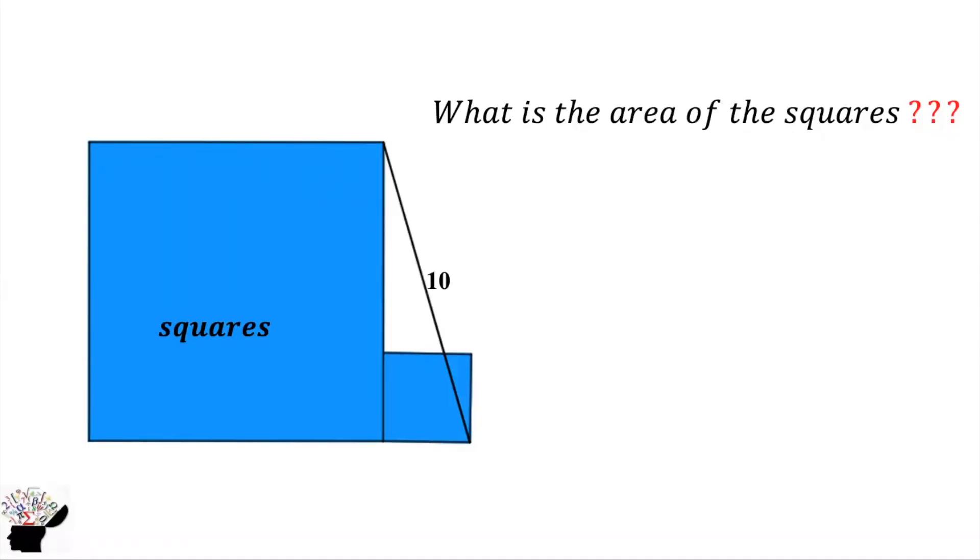Welcome you all to my YouTube channel. So today we will consider this question. We are supposed to find the area of the squares, right? So we have two squares, one is bigger and the other one is smaller, and we have just a line drawn from this point to the other point and it's 10.